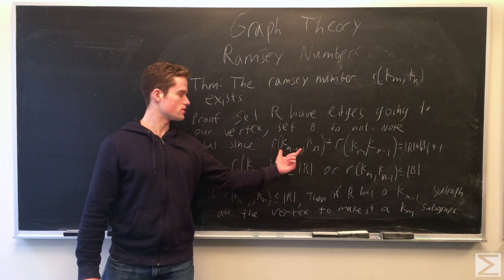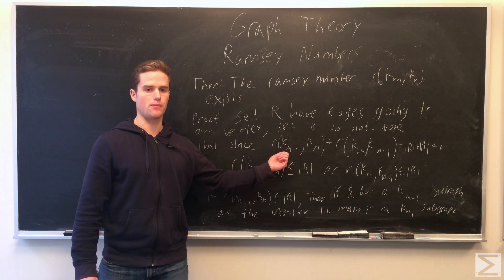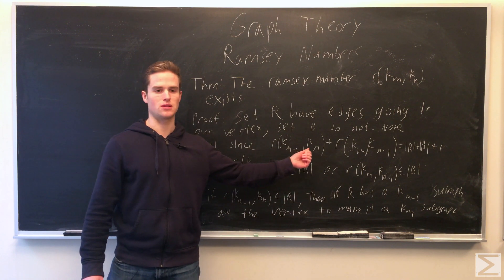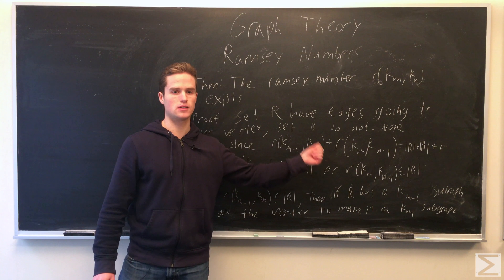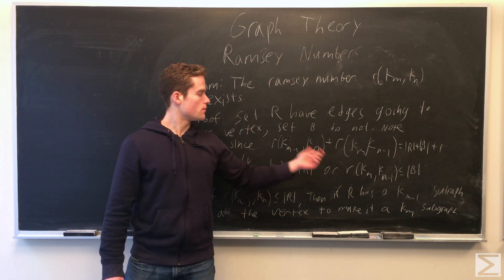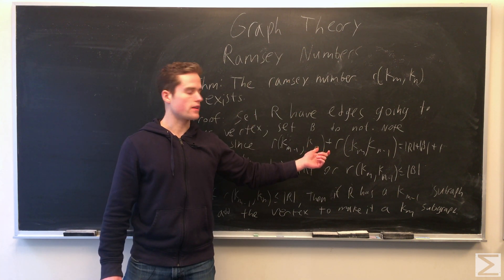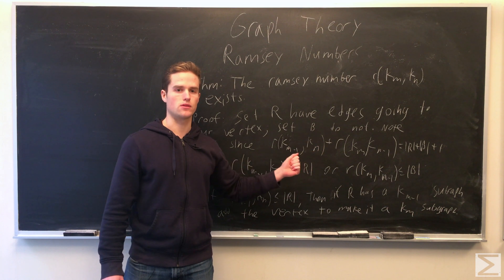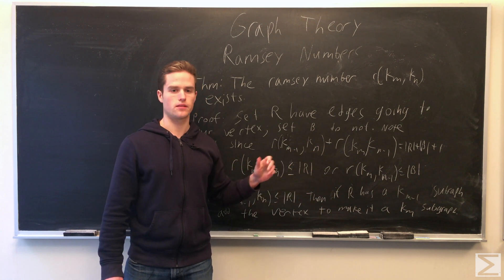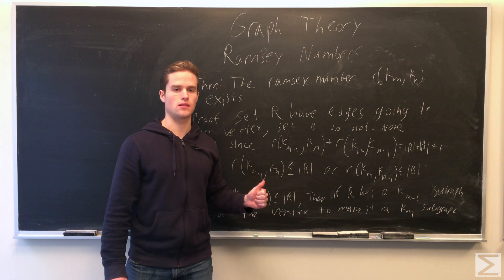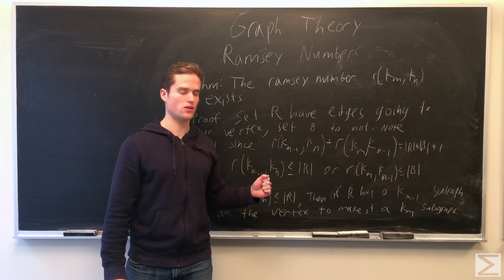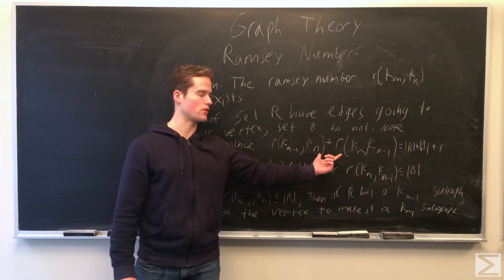So our total amount of vertices is R(k_n minus 1, k_n) plus R(k_m, k_n minus 1). And that equals the magnitude of the set of vertices that do have edges plus the magnitude of the set of vertices that do not have edges plus our one vertex. That's all the vertices, so we have an equality.